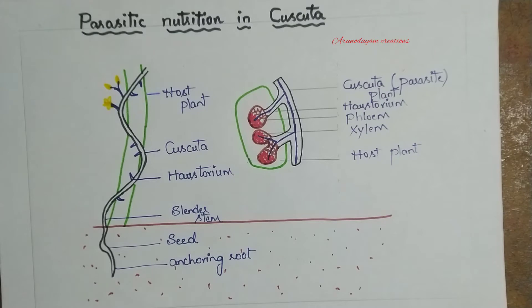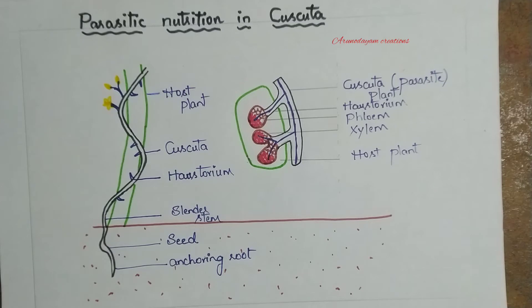Twining means to wind around a host plant. The genus Cuscuta contains nearly 170 twining species, representing about 170 varieties of plants.